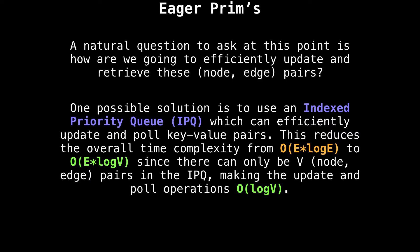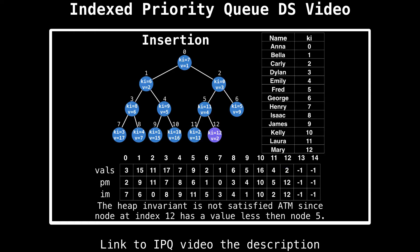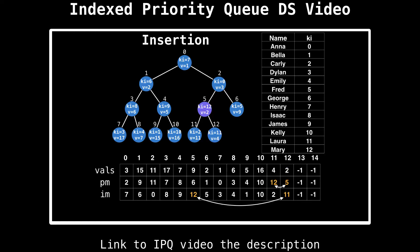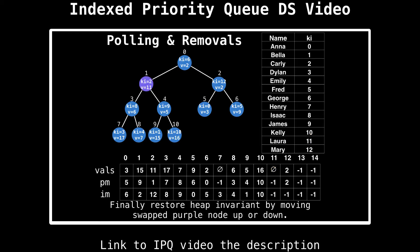You can think of an IPQ as the data structure you would get if a hash table and a priority queue had a baby together. It supports sorted key-value pair updates and pull operations in logarithmic time. Using this new approach would reduce the overall time complexity from O(E log E) to O(E log V), since there can only be V node-edge pairs in the IPQ. If you're interested in learning more about the index priority queue data structure, I would highly recommend my data structures video on the subject — I will link it in the description below.